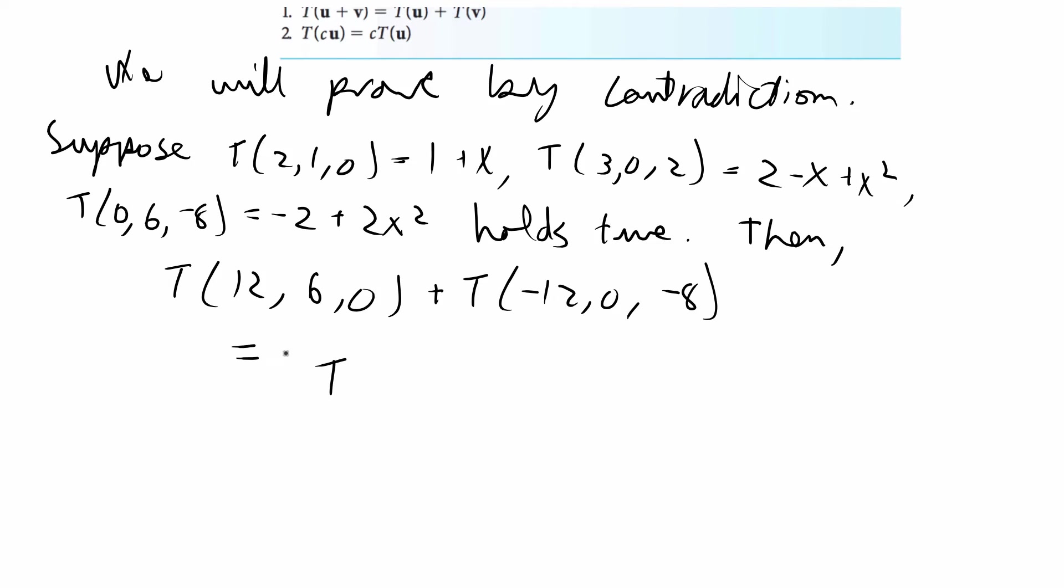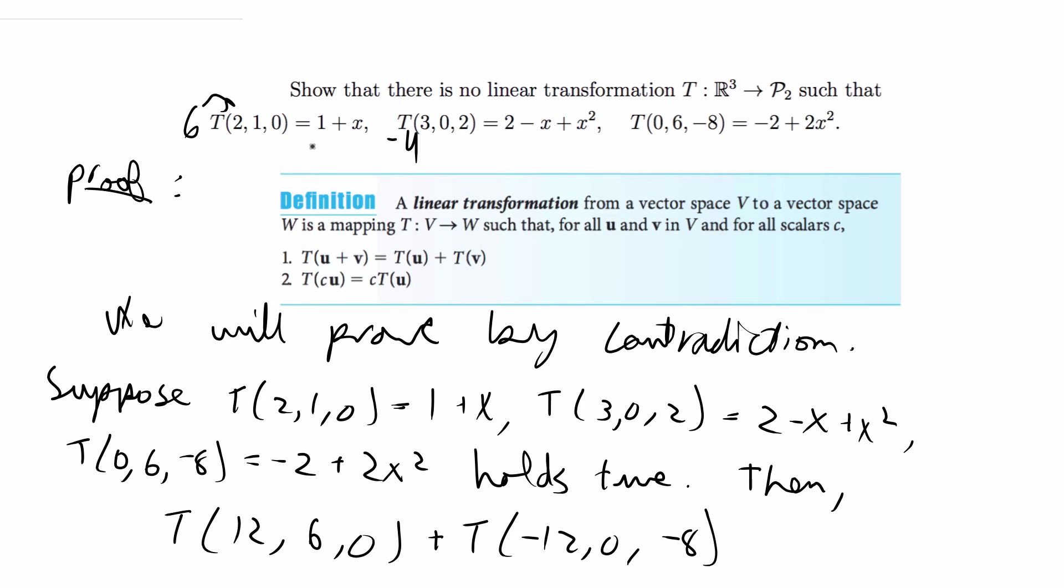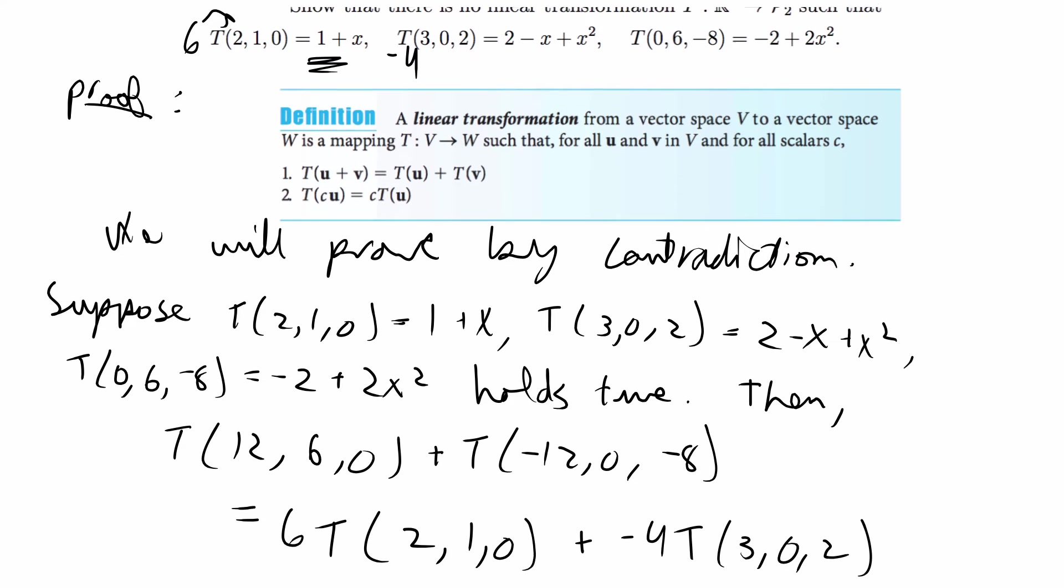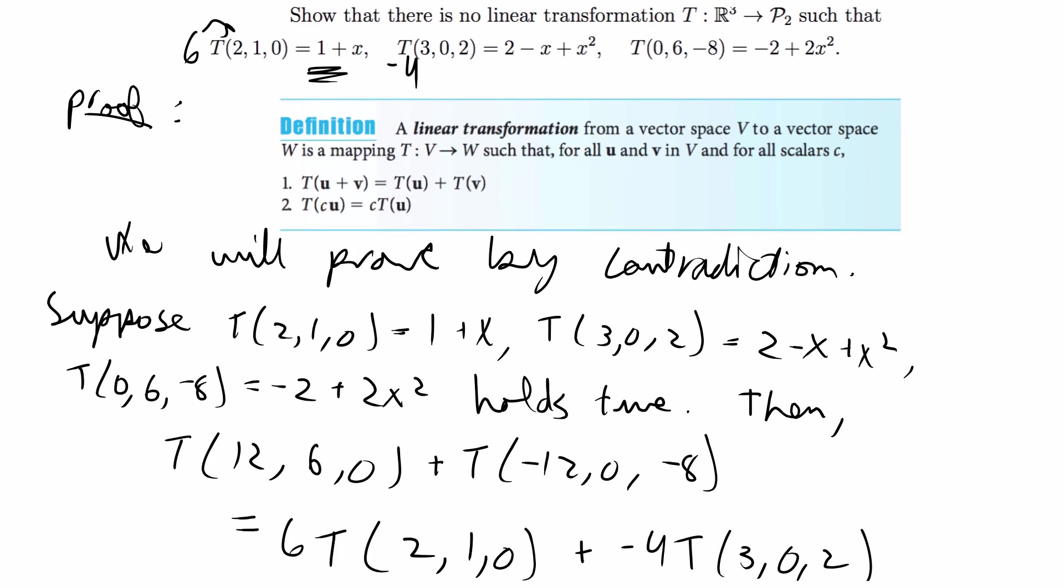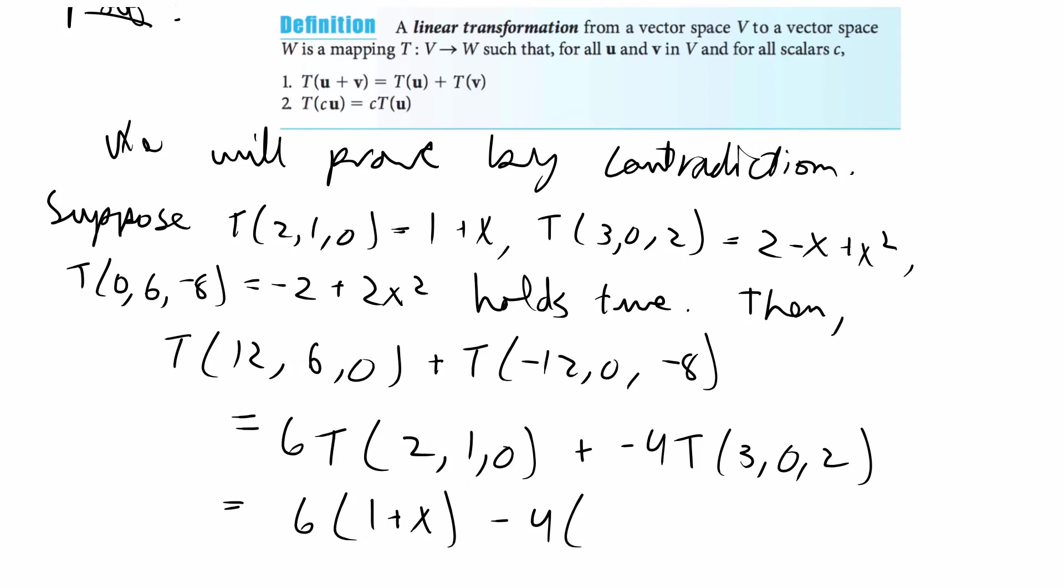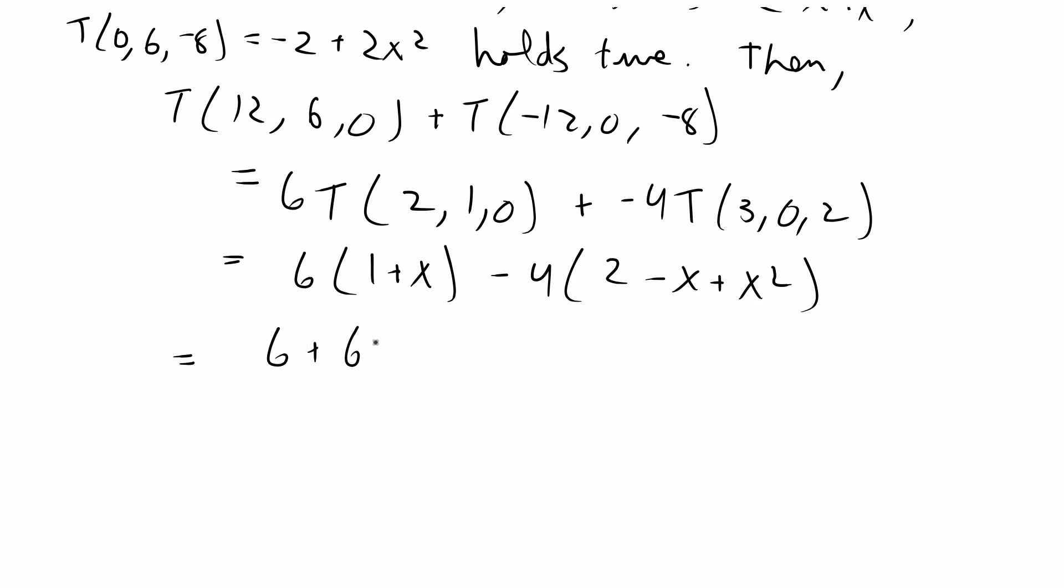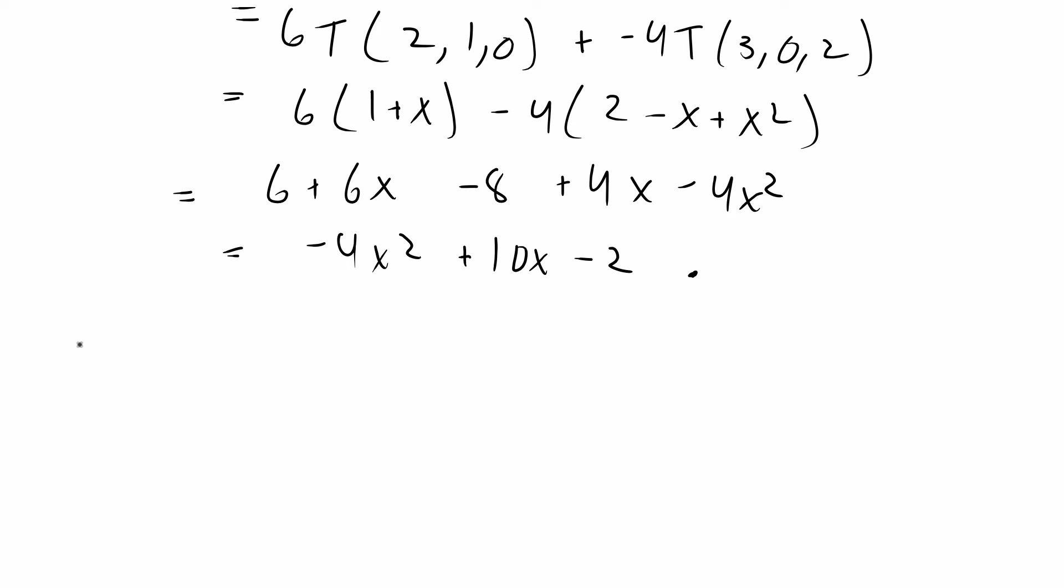Which will equal, that will be 6 times the transformation of (2, 1, 0) plus negative 4 times the transformation of (3, 0, 2). And this is going to be equal to 6 times whatever we were given. So we're using the assumptions here, so that's going to be 6 times 1 plus x minus 4 times whatever we were given. So that's 2 minus x plus x squared. So that's going to be equal to 6 plus 6x minus 8 plus 4x minus 4x squared, which is equal to negative 4x squared plus 10x minus 2. But we'll see that that's already a problem.